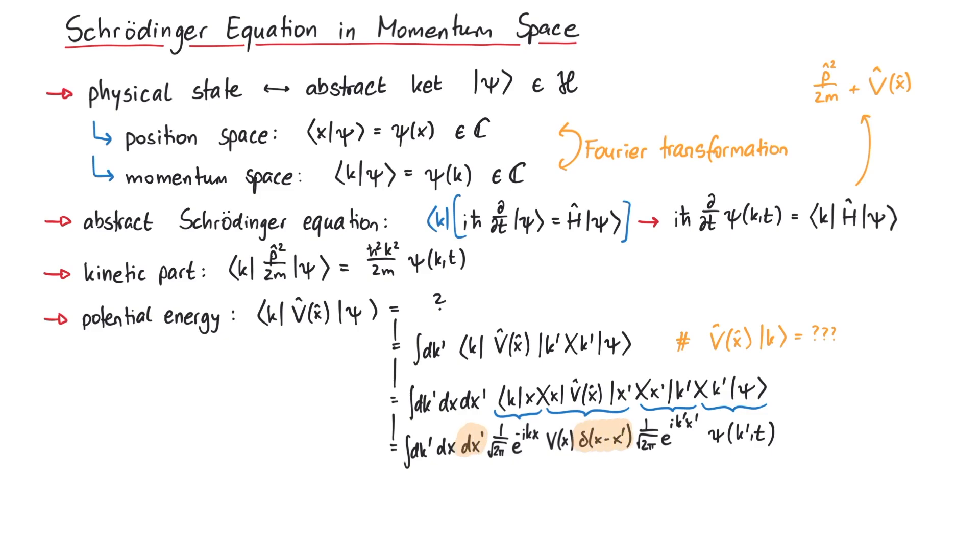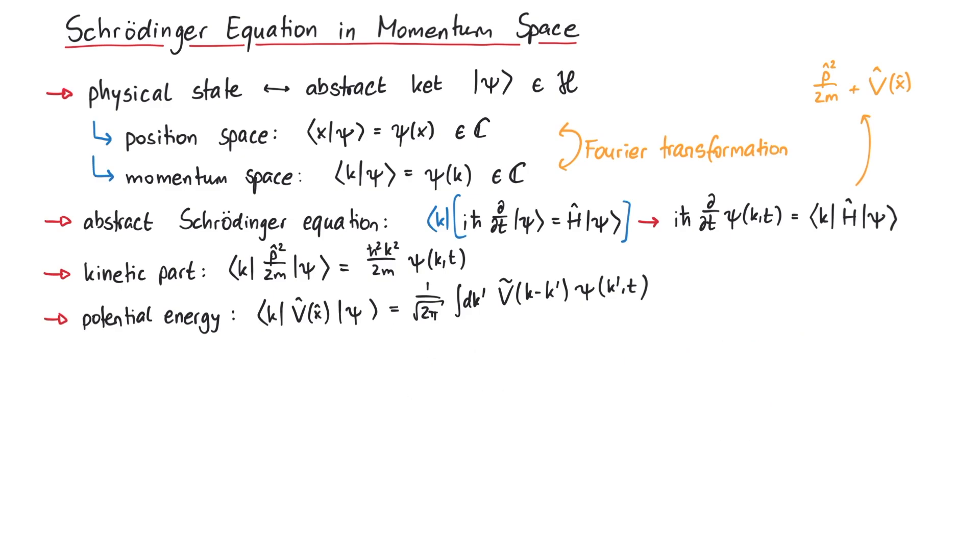After using the delta function to get rid of the x-prime integration, we separate the terms like this. Everything inside the square brackets now looks like a Fourier transformation, such that we can write this as v tilde of k minus k-prime. Finally, the result is 1 over the square root of 2pi times the integral over k-prime v tilde of k minus k-prime and the wave function psi tilde of k-prime.